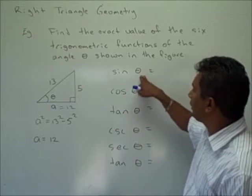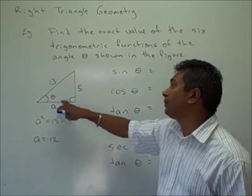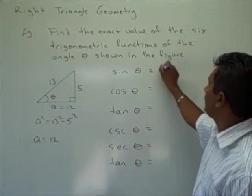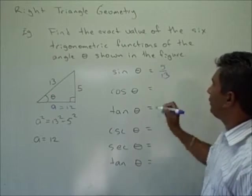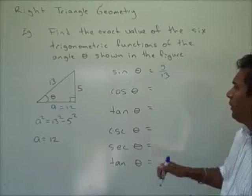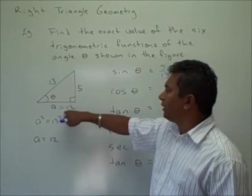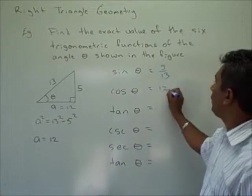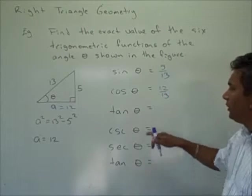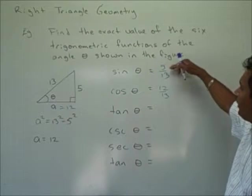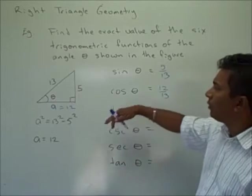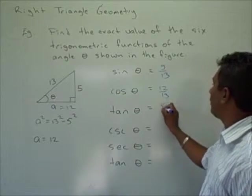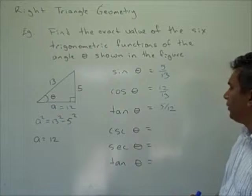If the adjacent is equal to 12, then we can find all six trigonometric functions. Sine of theta is equal to the opposite over the hypotenuse, so sine of theta is equal to 5 over 13. Cosine of theta is the adjacent over the hypotenuse, so this is 12 over 13. Tangent theta is equal to sine over cosine, or opposite over adjacent, so this is 5 over 12.